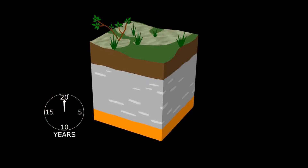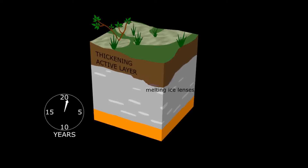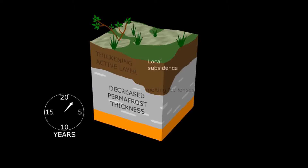In a period of climate warming, the stable seasonal pattern breaks down. The air warms and then the soil warms. The active layer begins to increase in thickness as the surface of the permafrost thaws and its ice lenses melt.